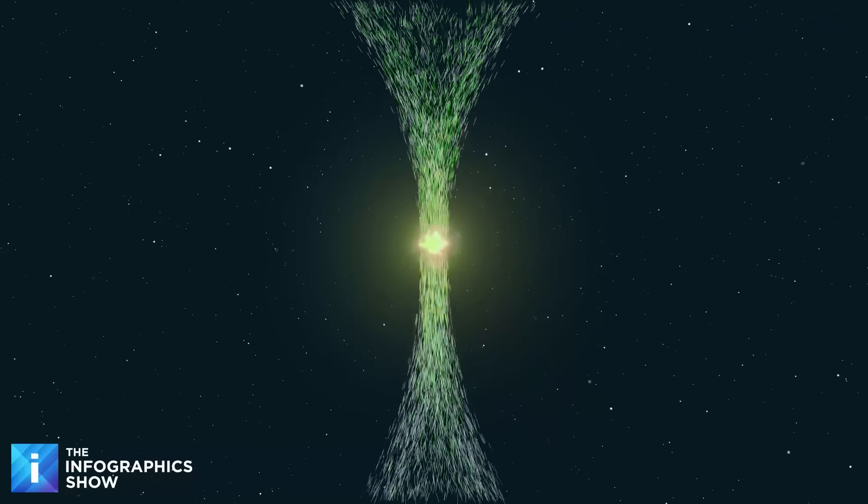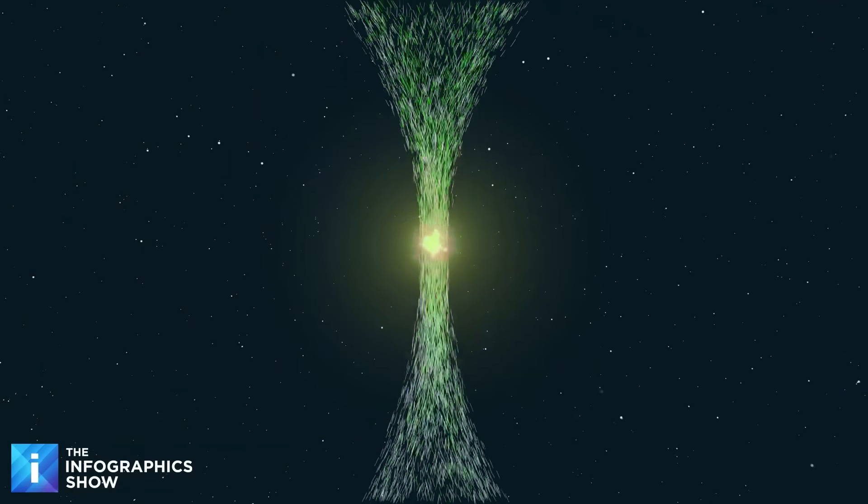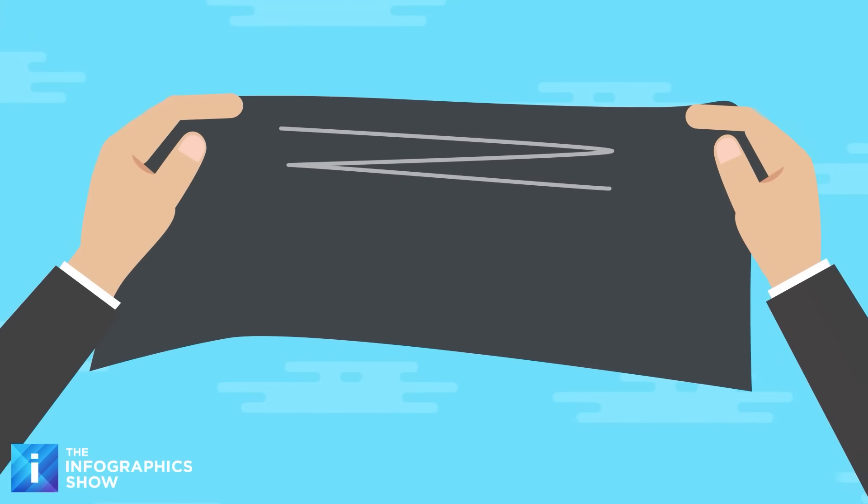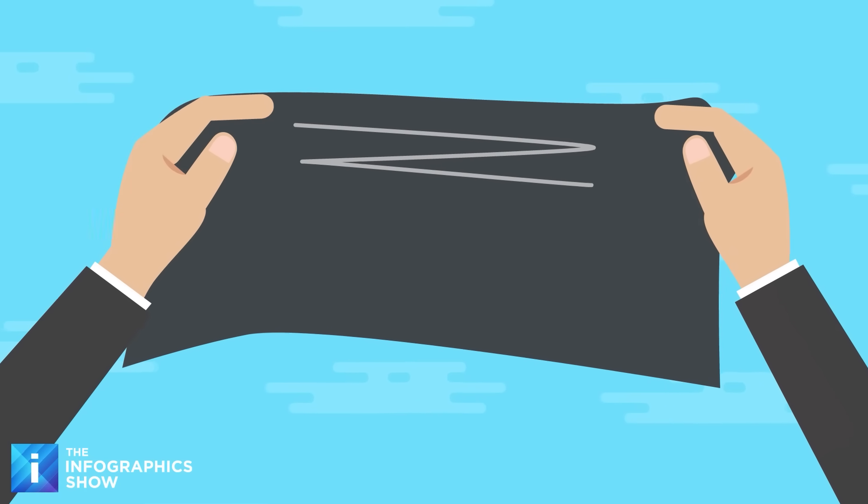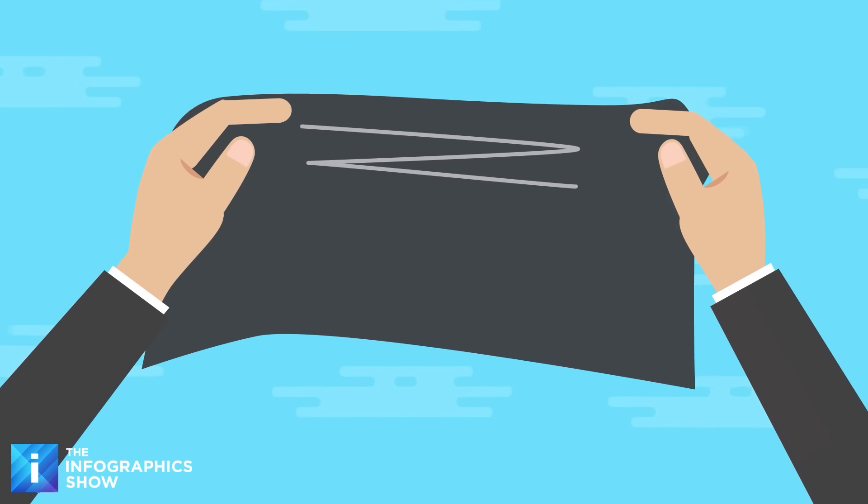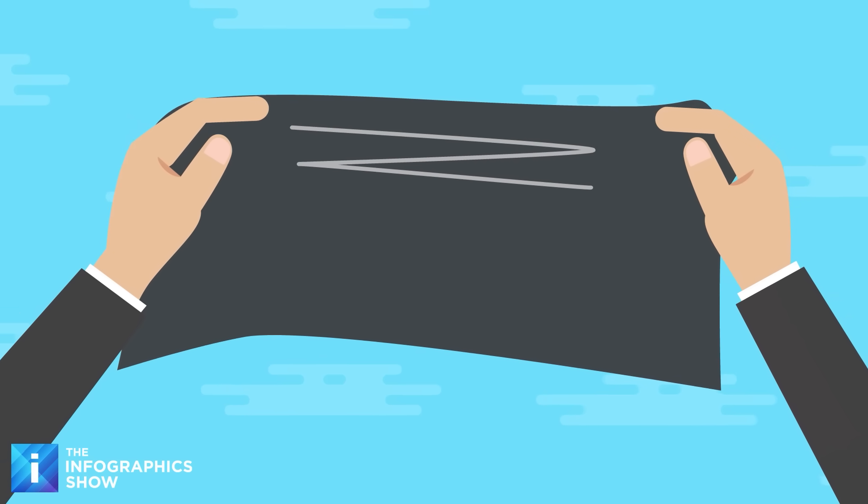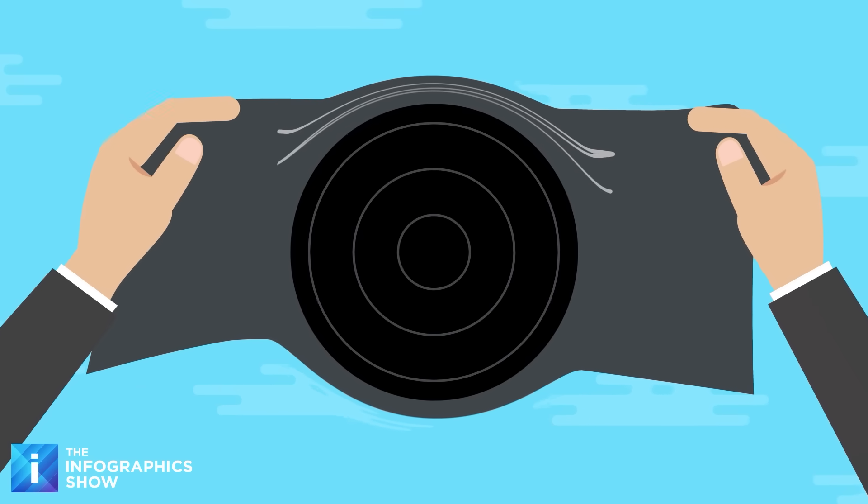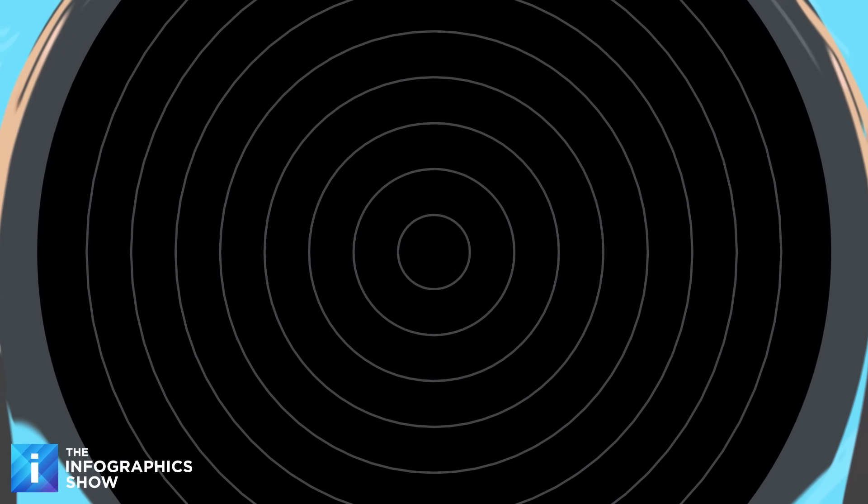A point of infinite density, where physics breaks down completely. This creates a gravitational field so intense, it warps spacetime itself. Imagine spacetime as a stretched rubber sheet. A bowling ball makes a dip in the sheet. A black hole? Well that punches a hole straight through it.